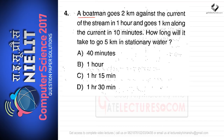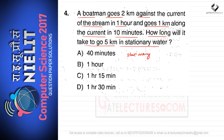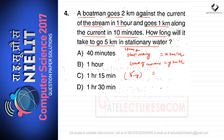The next question: a boatman goes two kilometers against the current of the stream in one hour and goes one kilometer along the current in 10 minutes. How long will it take to go five kilometers in stationary water? Let the speed in stationary water be x km/h and speed of current be y km/h. The upstream speed x minus y equals two kilometers per hour.